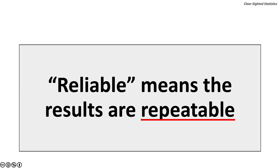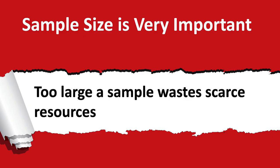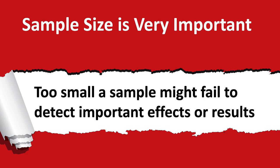To conduct a census, which is the counting of the entire population, it would be impossible to count every sturgeon swimming in the Hudson River. When properly conducted, samples are reliable. Reliable means consistent results when the sample is repeated. Sample size is very important. Too large a sample wastes scarce resources. Too small a sample might fail to detect important effects or results.